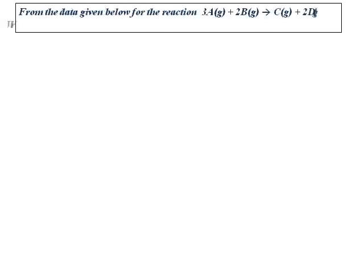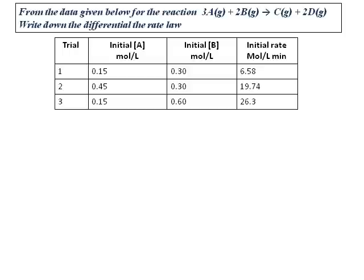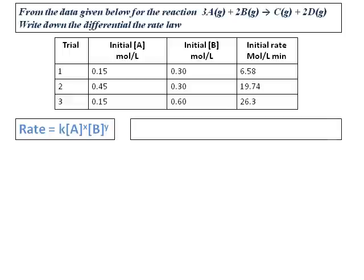We will do another question. From the data given for the reaction 3A + 2B → C + 2D, write down the differential rate law. The rate law is not given, so we must determine it from the data. The differential rate law will be: rate = k[A]^x[B]^y. We need to find x and y experimentally by looking at the table provided.